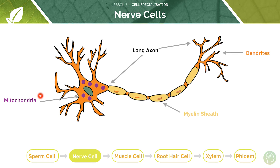We also have mitochondria. Making these neurotransmitters requires lots of energy, and that's provided by the large number of mitochondria. The mitochondria are located in the vicinity of where the production of neurotransmitter is required in the cell.